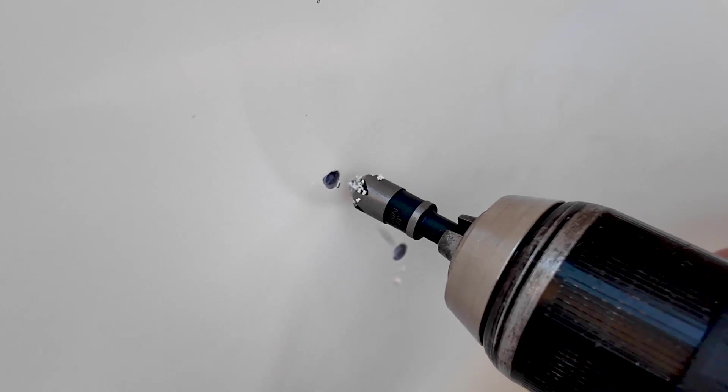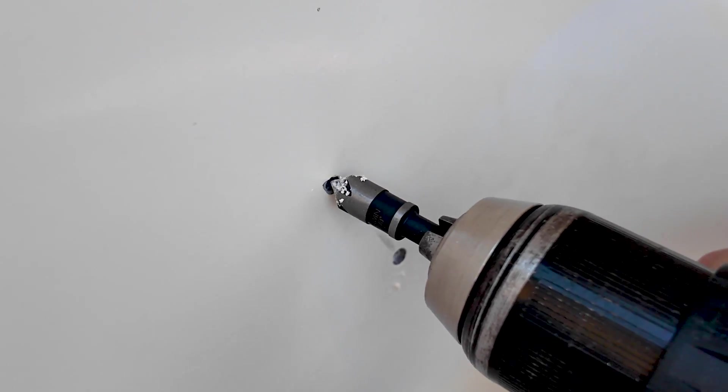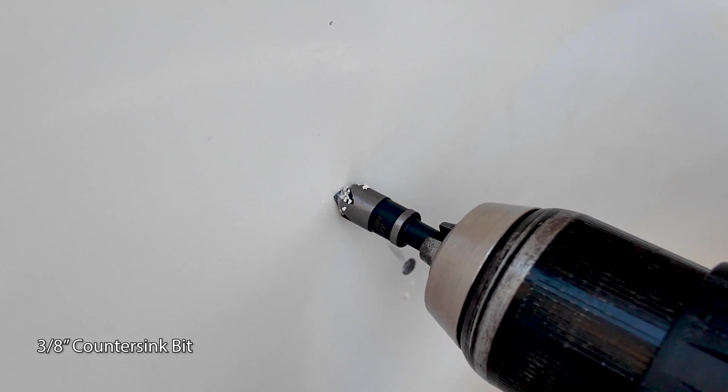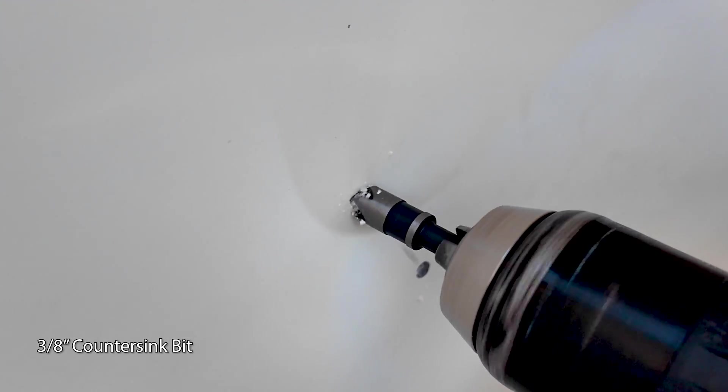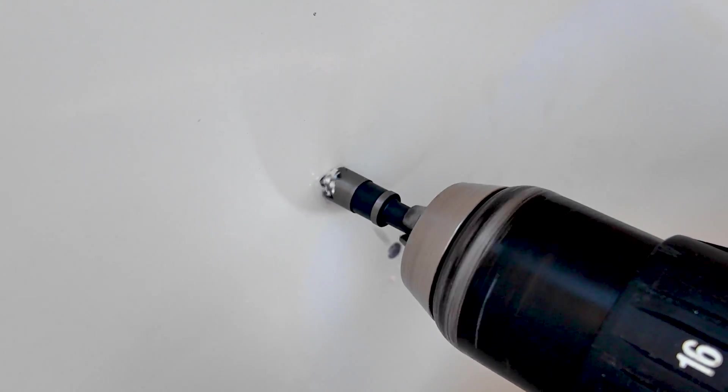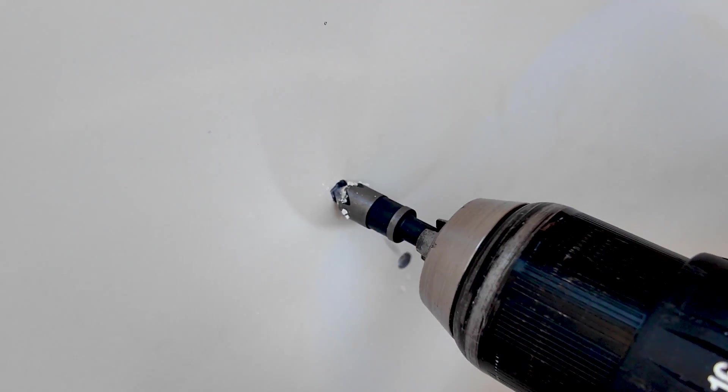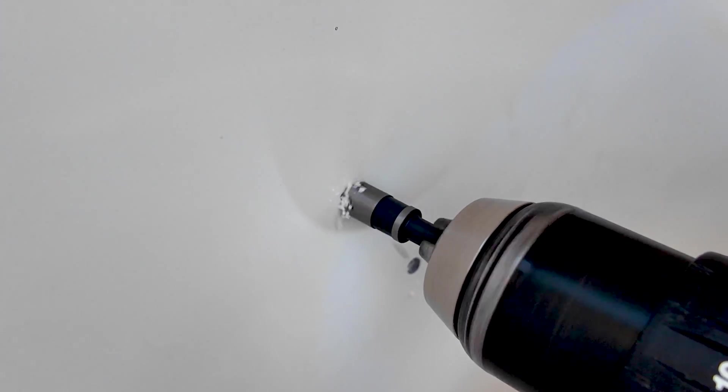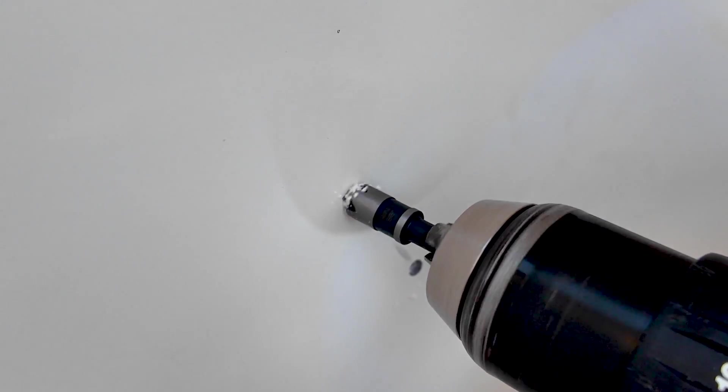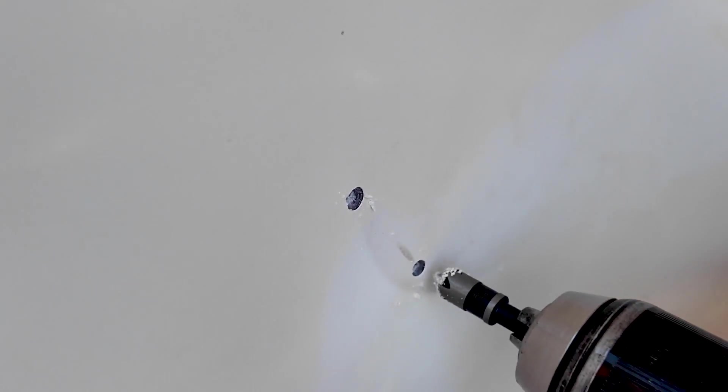We're going to countersink that hole with this three-eighths inch countersink bit, and this helps to prevent spidering of the fiberglass and it also helps the butyl tape to sink into the cavity. So that should be just about perfect.